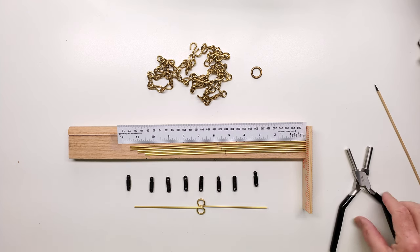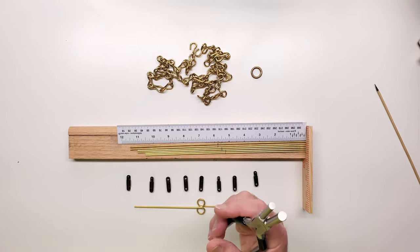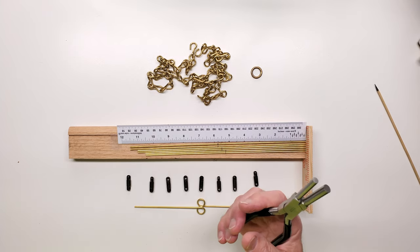Now, taking my bail-making pliers, I'll put a 9mm double loop in the middle of each of the brass rods.